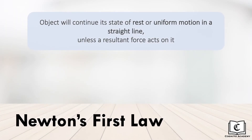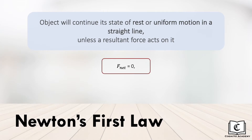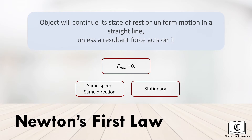Newton's first law of motion states that an object will continue its state of rest or uniform motion in a straight line unless a resultant force acts on it. In layman terms, if the resultant force on an object is zero, its speed and direction remain the same. Or if it is stationary, it will remain stationary.